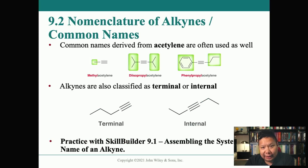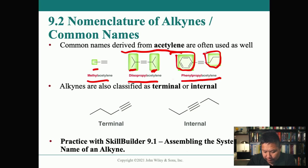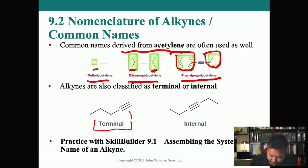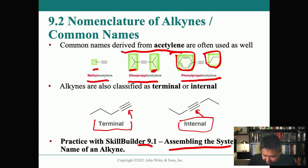There's also the common name system derived from acetylene — for example, methylacetylene has a methyl group, diisopropylacetylene has two isopropyl groups, and phenylisopropylacetylene has a phenyl group on one side and a propyl group on the other. Alkynes are also classified as terminal — when the triple bond is at the end of a carbon chain — or internal, when it's somewhere other than the end.